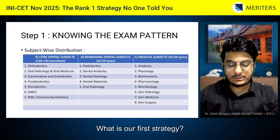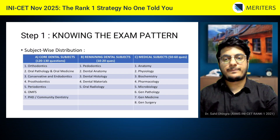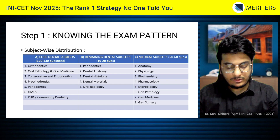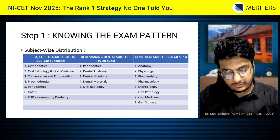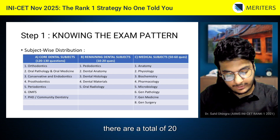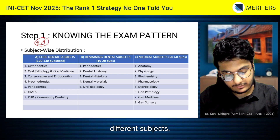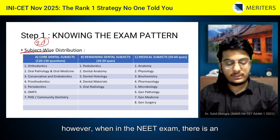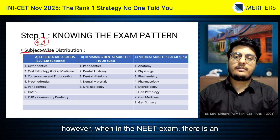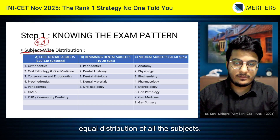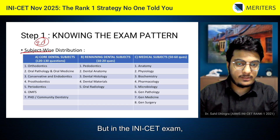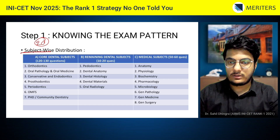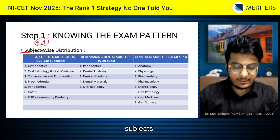What is our first strategy? Step 1 is knowing the exam pattern. When we see the exam pattern, there are a total of 20 different subjects. However, in the NEET exam there is an equal distribution of all the subjects, but in the INICET exam the distribution is not that equal — it is slightly in favor of the dental subjects.